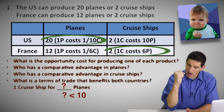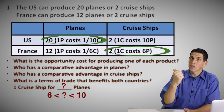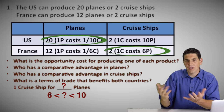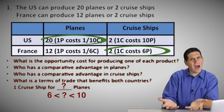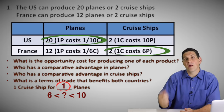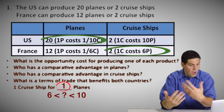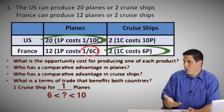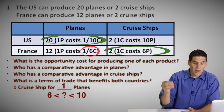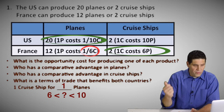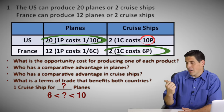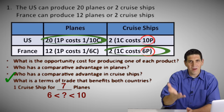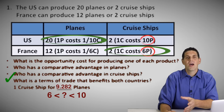The number also has to be above six. If it's below six, France doesn't want to go for the deal — they'd rather produce the planes on their own. If France trades one cruise ship for one plane, each plane would cost them one whole cruise ship. But if they produce planes on their own, it only costs them one-sixth of a cruise ship. So the number has to be above six for France and below 10 for the United States. Any number between six and 10 works — like seven, or even 9.282. There is a range that benefits both countries.